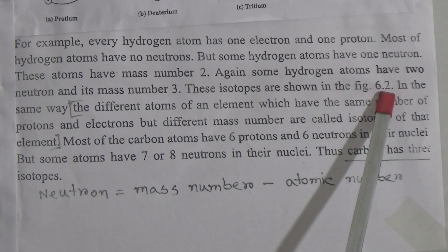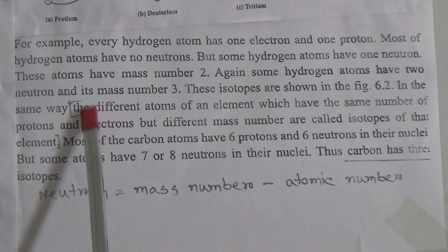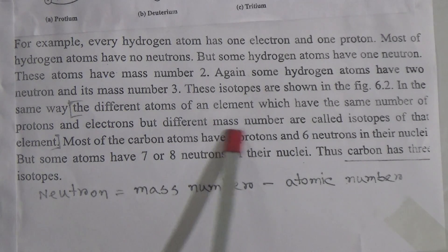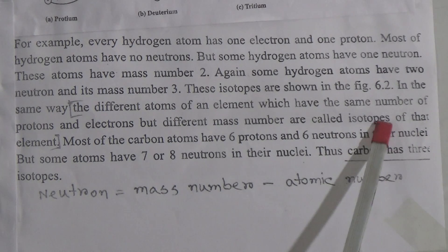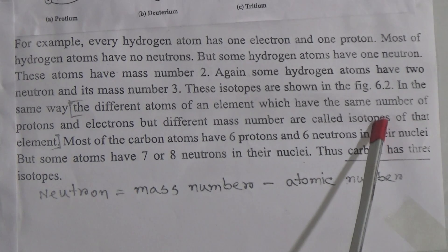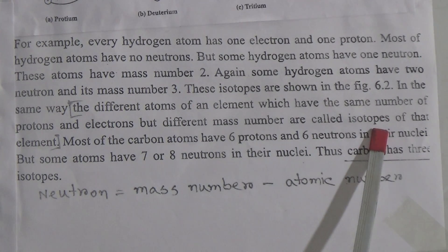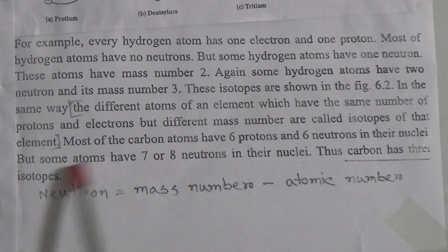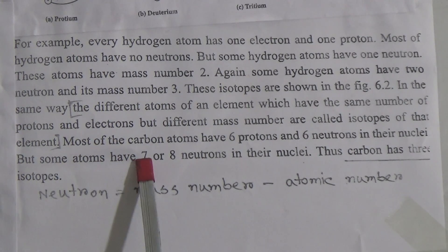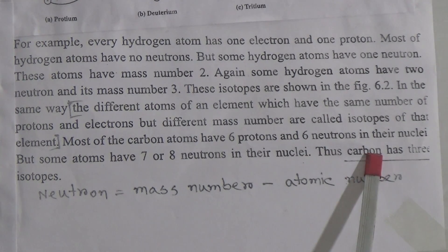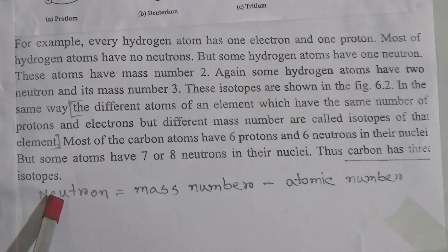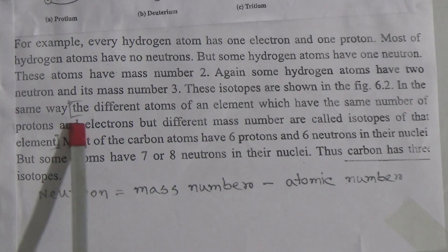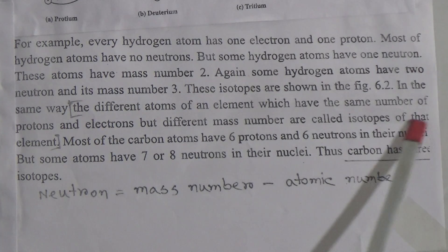These isotopes are shown in figure 6.2. Now, here is the definition of isotopes: the different atoms of an element which have the same number of protons and electrons but different mass numbers are called isotopes. Dear students, in isotopes you have to remember that the proton number will be the same, but the neutron number will be different. That is why the mass number will be different. Most carbon atoms have 6 protons and 6 neutrons, but some atoms have 7 or 8 neutrons in their nuclei. Thus, carbon has 3 isotopes, just as hydrogen also has 3 isotopes.